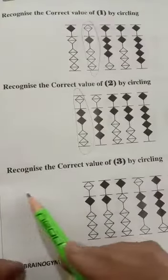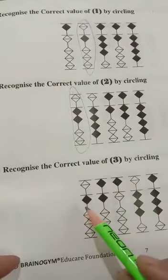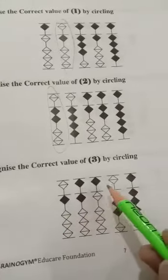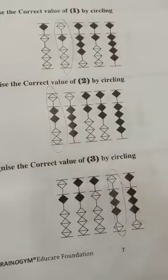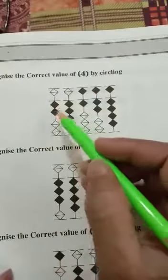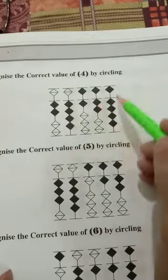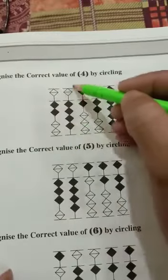Now the correct value of 3. 1, 6, 5, 3 and 8. Then you circle the 3. Page number 8. Now the correct value of 4. 2, 4, 6, 7, 9. Then you circle this one is the 4.